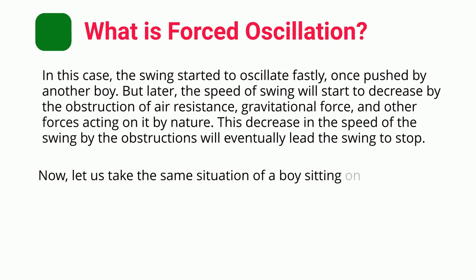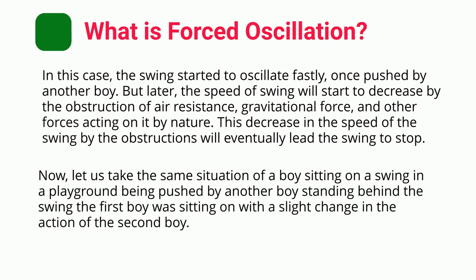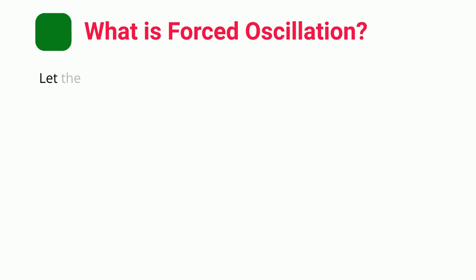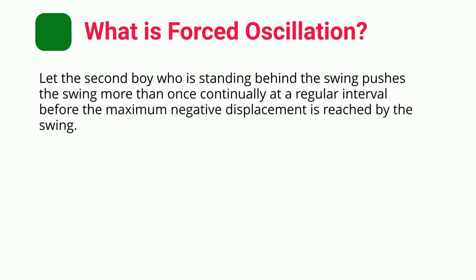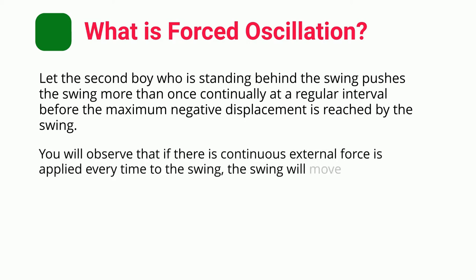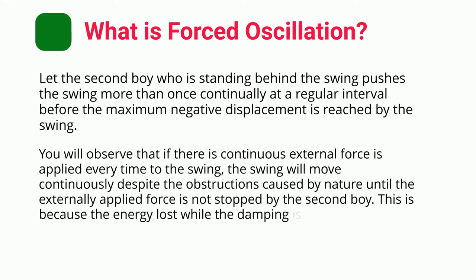Now, let us take the same situation of a boy sitting on a swing in a playground being pushed by another boy, with a slight change: the second boy pushes the swing more than once continually at a regular interval before the maximum negative displacement is reached. You will observe that if continuous external force is applied every time to the swing, the swing will move continuously despite the obstructions caused by nature, until the externally applied force is stopped by the second boy. This is because the energy lost while damping is recovered by regular pushes.